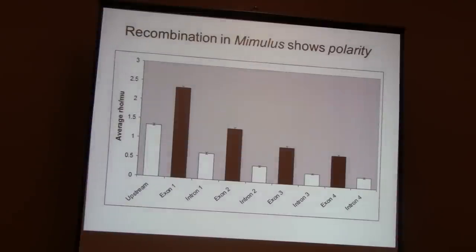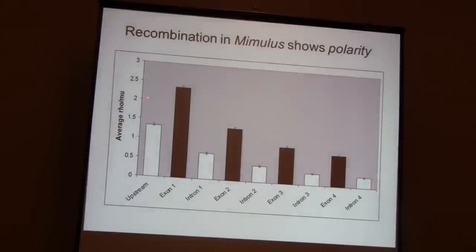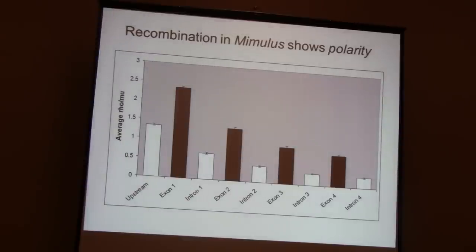If there is one slide in this entire talk to retain, this would be the one. I've taken all multi-exon genes and binned the HEPs according to whether they fall in exon 1, 2, 3, or upstream. There is a very significant drop in observed recombination events as you move into a gene. The interpretation is that double-stranded breaks happen upstream in the vicinity of the promoter, and as the D-loop extends inward, more and more D-loops have already terminated, so you get less and less residual D-loop activity making a recombination imprint deeper in the gene.